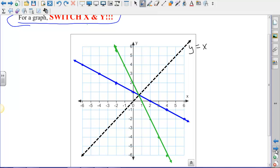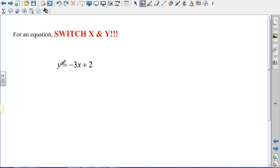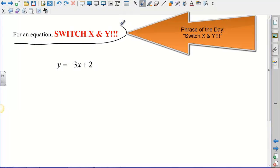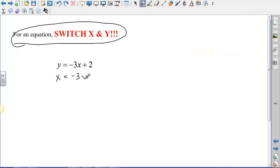To find inverses of equations, we're going to do the same thing. We have y = -3x + 2. Phrase of the day: Switch x and y. So I'm going to say x = -3y + 2. Now, we don't have an x equals button on our calculator, and we usually don't leave equations where x is equal to something else. So what we're going to do is we're going to solve for y. So I switched x and y here, now I'm going to solve for y. I would subtract 2 from both sides, that would give me x - 2 = -3y, and then I would divide both sides by -3.